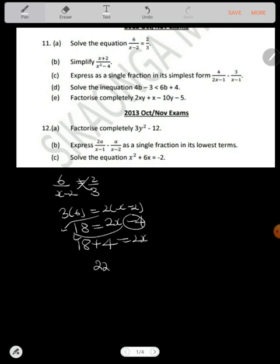4 to the other side is 22, which is equal to 2x. So we are finding the value of x, so we divide both sides by 2. So get your value of x as 11.